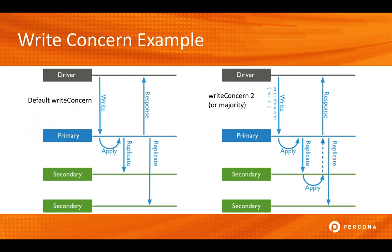On the right-hand side, we show with a write concern of two. In this case, the write request comes in from the application and is applied on the primary, but then it must be replicated to at least one of the other nodes before it can be acknowledged back to the application that the write was acceptable.